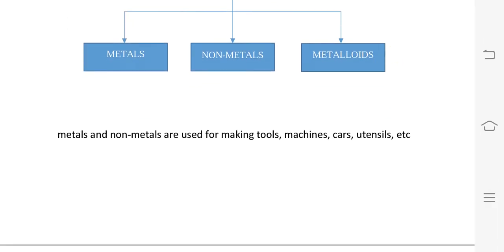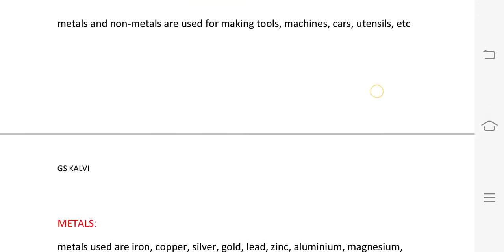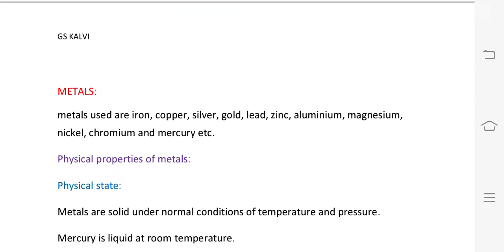Metals are used to make tools, machines, cars, and utensils. Examples of metals include iron, copper, silver, gold, lead, zinc, aluminum, magnesium, nickel, chromium, and mercury.